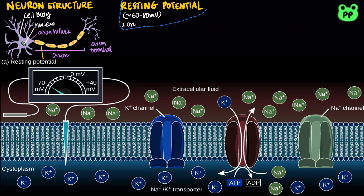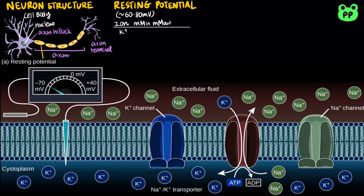The resting potential is determined by the uneven distribution of ions across the cell. The equilibrium potential of an ion is the membrane potential that exactly balances the concentration gradient for that ion. The resting potential is maintained by ion pumps and ion channels, which cause uneven distribution of major ions. At resting potential, the concentration of potassium ion is greater inside the cell. To balance out the concentration gradient, potassium ion would spontaneously flow outside the cell, leading to hyperpolarization. Therefore, the equilibrium potential for potassium ion is more negative than the resting potential.